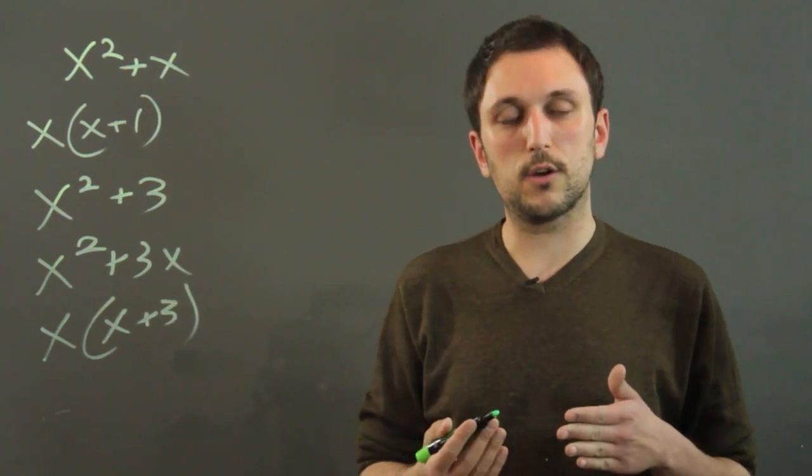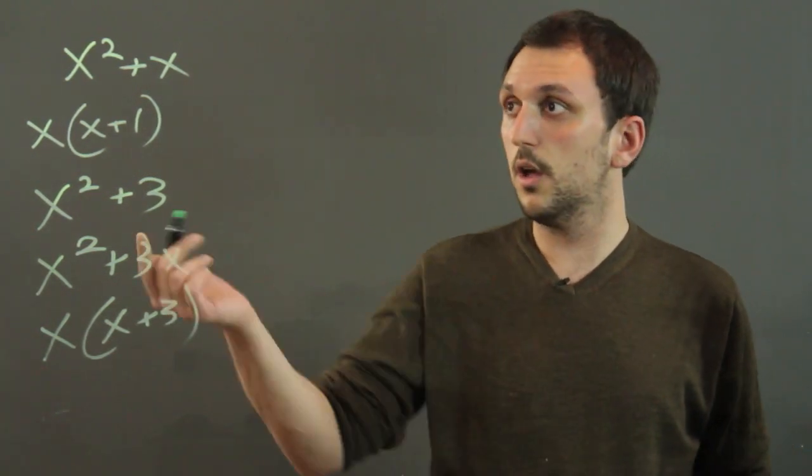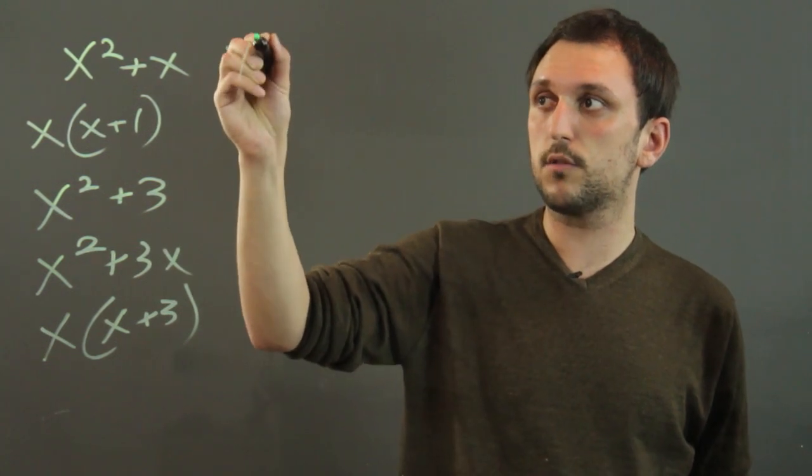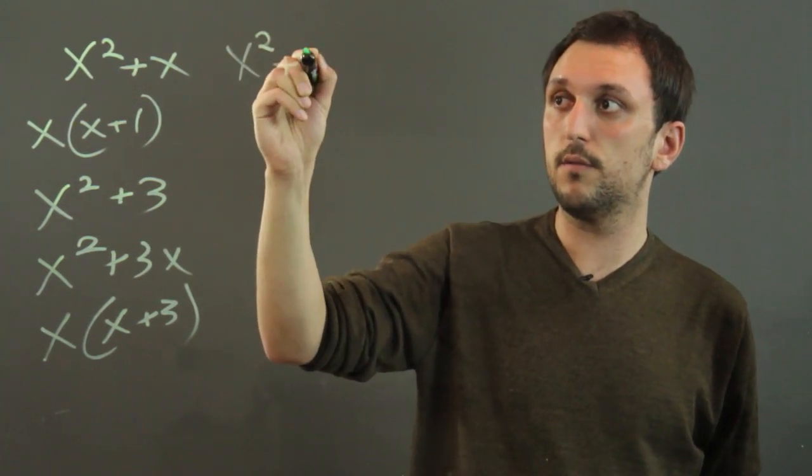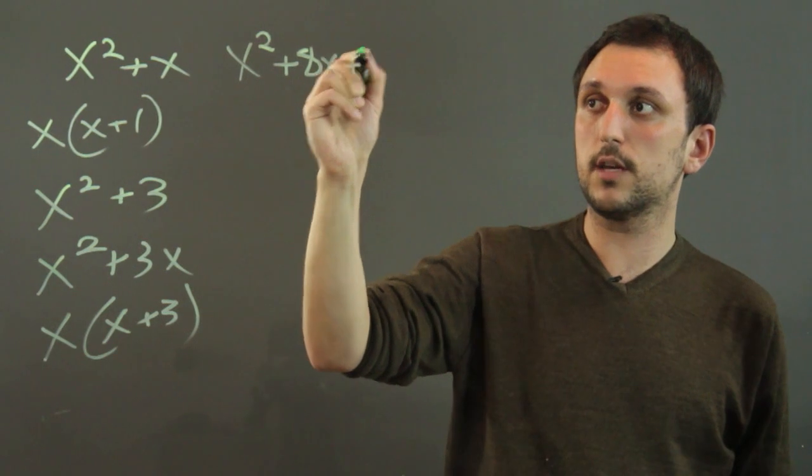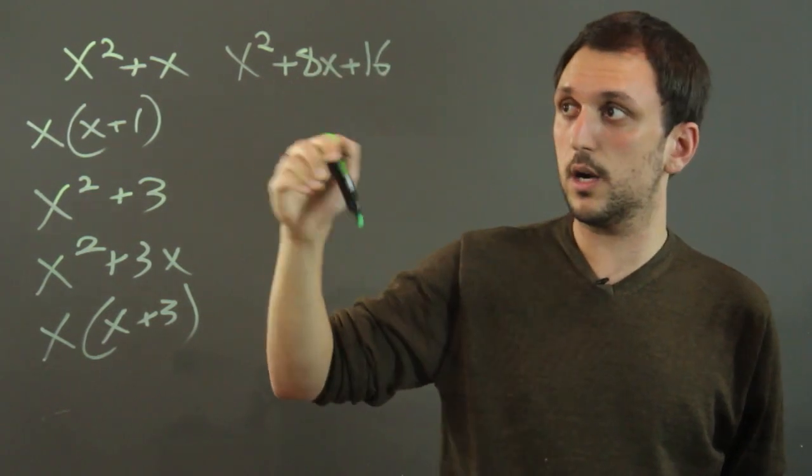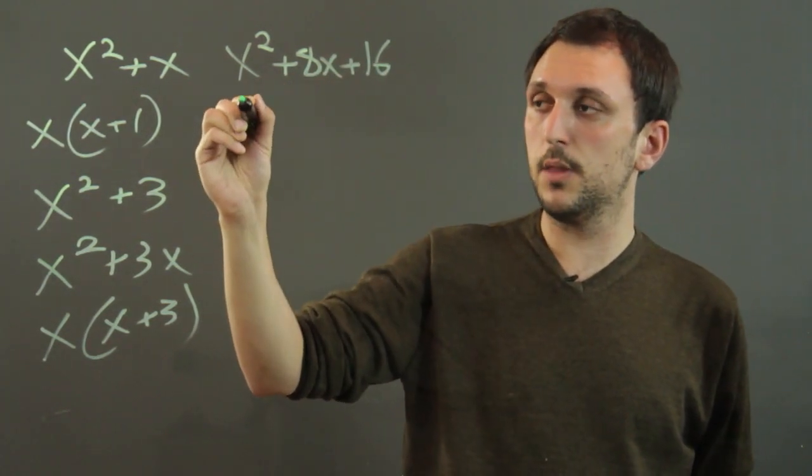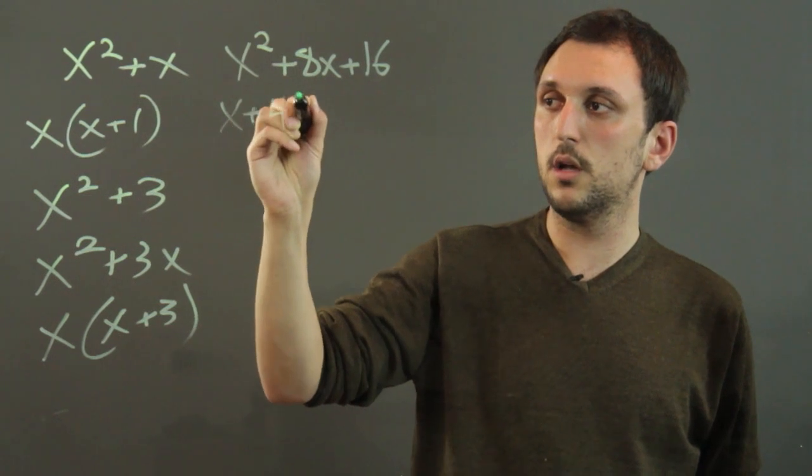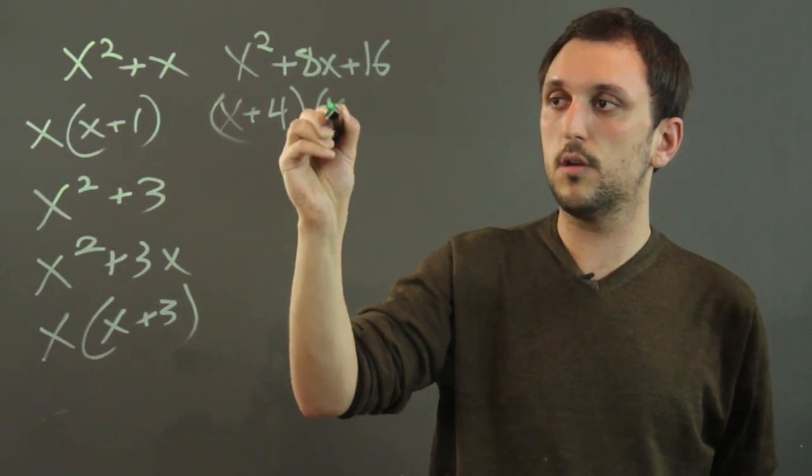You can have longer quadratic expressions, but not all of them can be factored. For example, this one, x squared plus 8x plus 16 is actually a perfect square that we can factor and say x plus 4 times x plus 4.